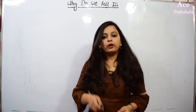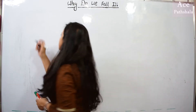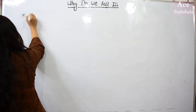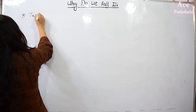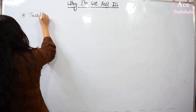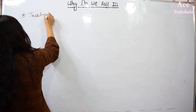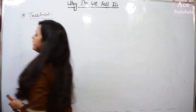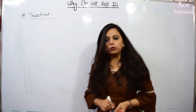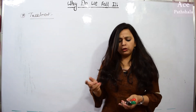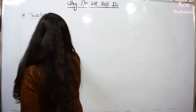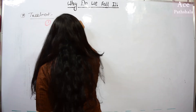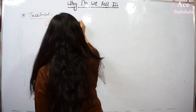Now let's talk about Principles of Treatment first. How can we treat someone who has a disease? There are two ways. First, we can reduce the disease effect.